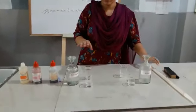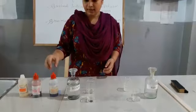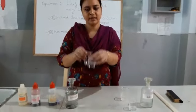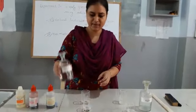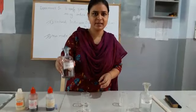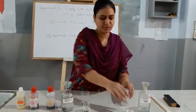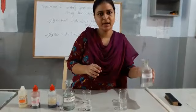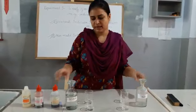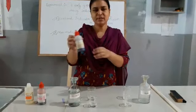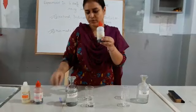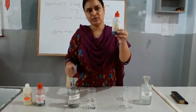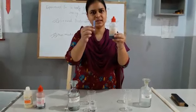Here you can see the apparatus used. I have taken two beakers — in these two beakers, this acid is present, named sulfuric acid. And in these two beakers, I have taken a base, that is sodium hydroxide. In indicators, I am using litmus solution blue, which is available in two forms: solution as well as the strip form.